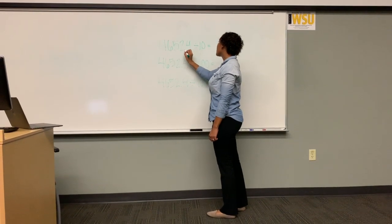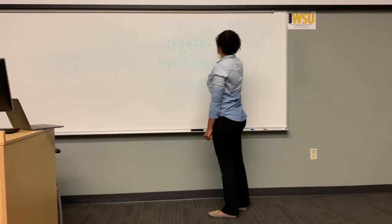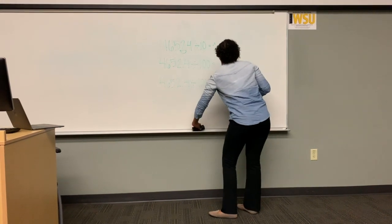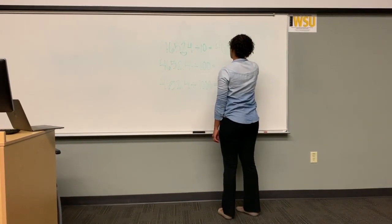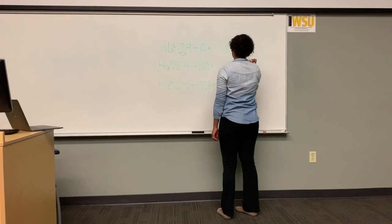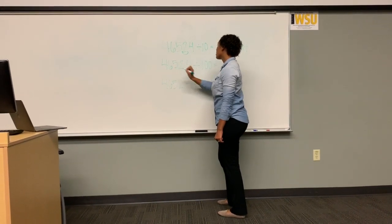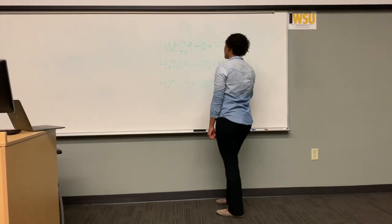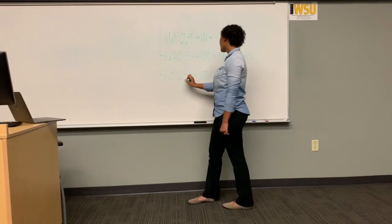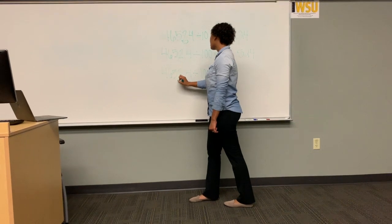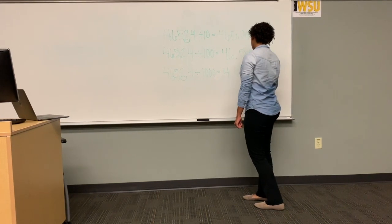When we divide by powers of 10 we are going to take the decimal point and move it over one time to the left. So the answer becomes 465.24. When you divide by 100 you are going to move it over two times to the left, so then you will have 46.524. And when you get down to the thousands you are going to move it over three times to the left, and you will have 4.6524.